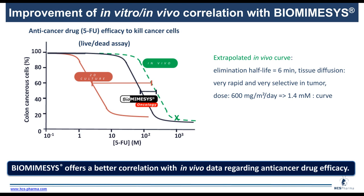This was done with colon cancer cells to test 5-fluorouracil anti-cancer drug efficacy. Using a live/dead assay, we compared 2D culture, Biomimesis Oncology, and in vivo responses. With 3D culture, we have a lower EC50 value — shown in red — much closer to the extrapolated in vivo curve in green. There is a huge gap between 2D cell culture and in vivo responses. With Biomimesis Oncology, we fill the gap between in vivo and in vitro models, showing that Biomimesis can offer better correlation with in vivo data regarding anti-cancer drug efficacy.